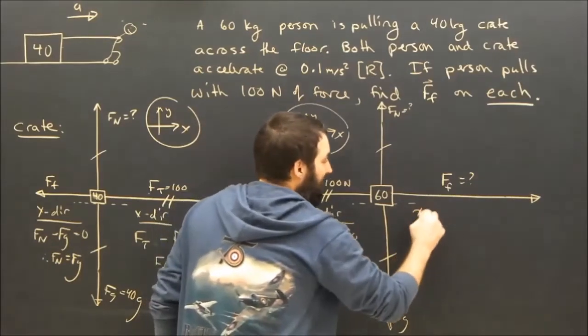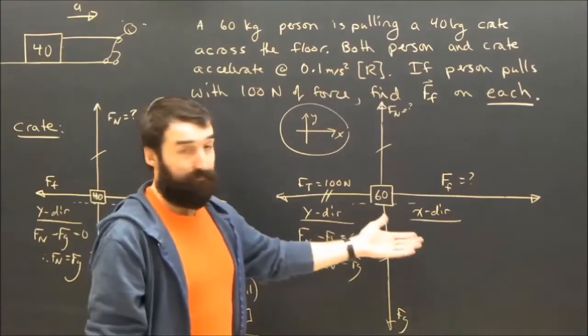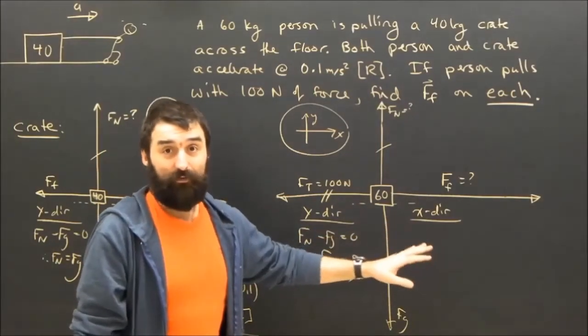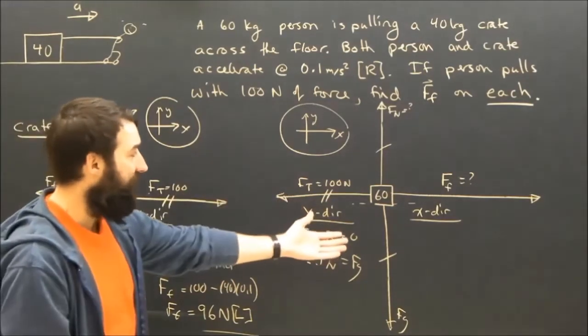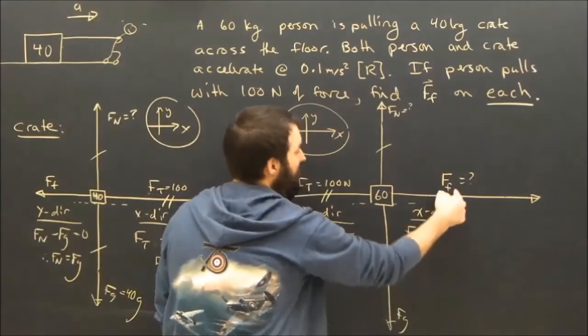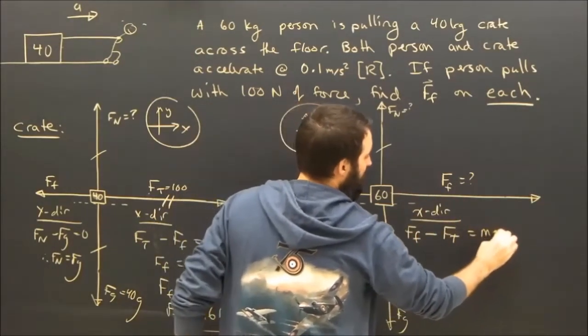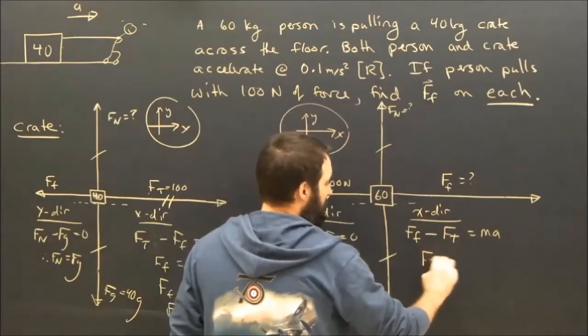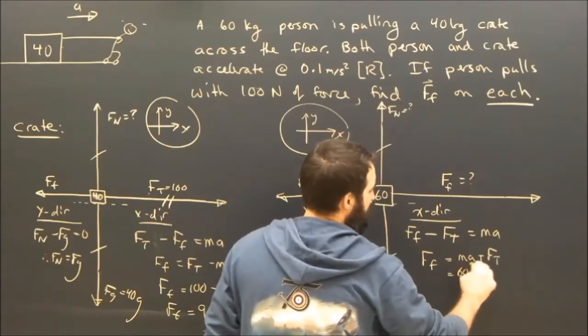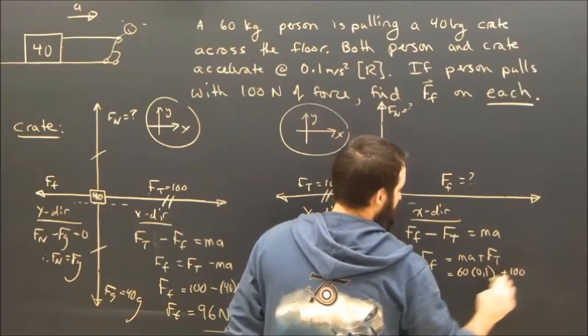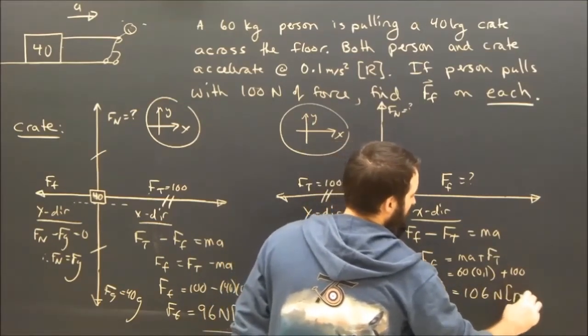In the x direction, what's the equation? So here's another place where the grade 11s who haven't really understood things go wrong. They're used to saying Fa minus Ff equals Ma, but over here, it's not. It's Ff, because Ff is in the positive direction, minus Ft, that is equal to Ma. Rearranging this, we see that Ff equals Ma plus Ft, which is 60 times 0.1 plus 100. So the force of friction on the person is 106 Newtons to the right.